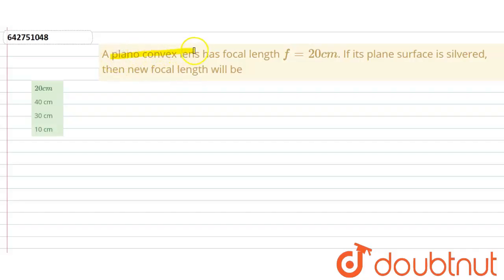A plano-convex lens has a focal length of 20 centimeters. If its plane surface is silvered, find the new focal length of that lens. First, we design the lens.